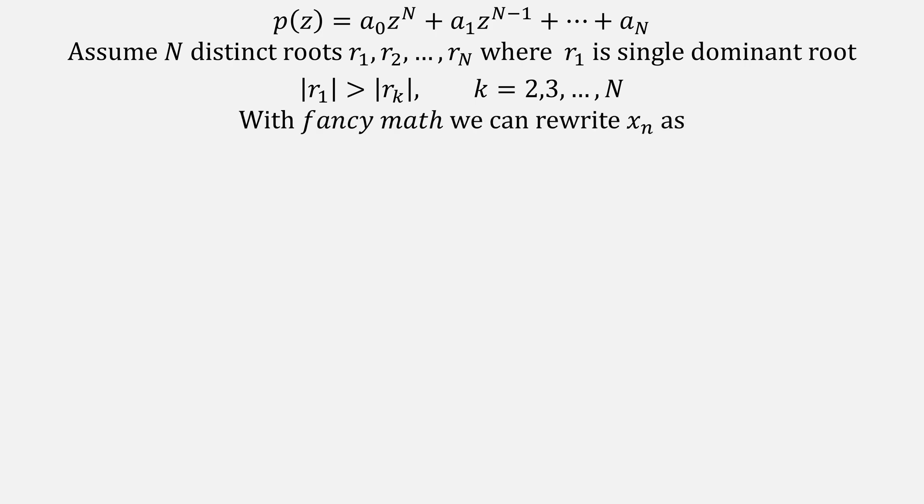We can do some fancy math to rewrite our equation for x sub n as this equation, multiplying each of our roots raised to powers against constants. These constants aren't going to matter very much, and you'll see why in a moment.